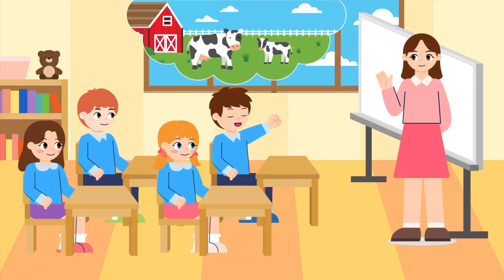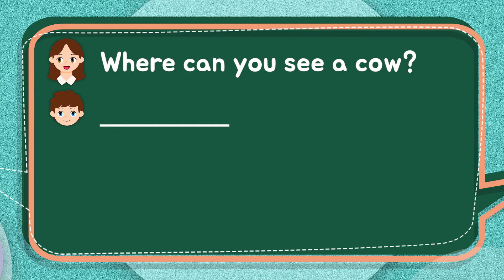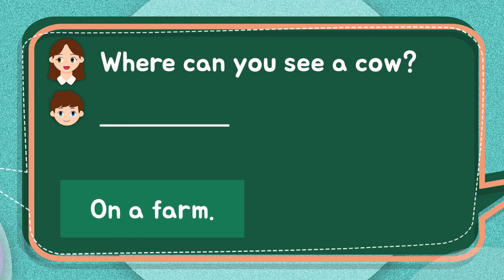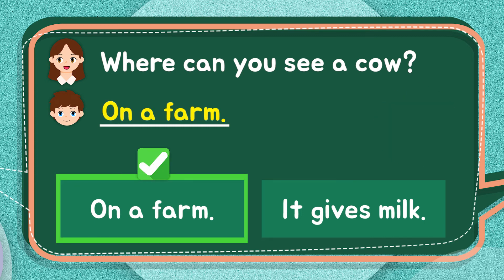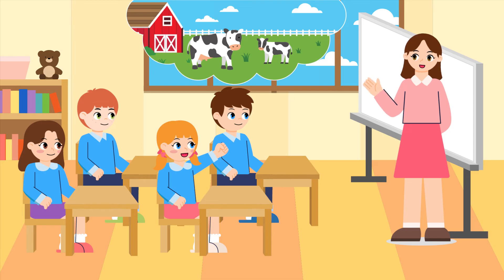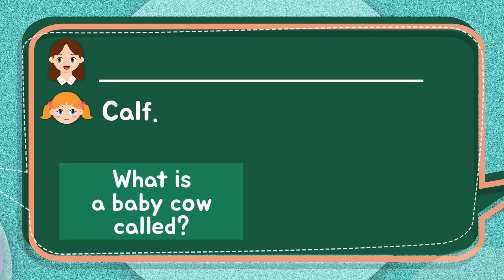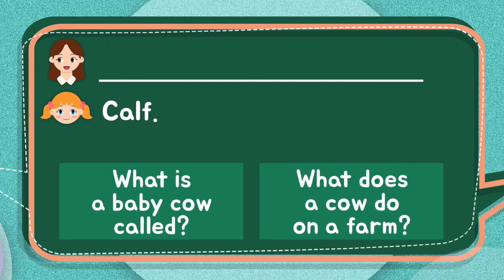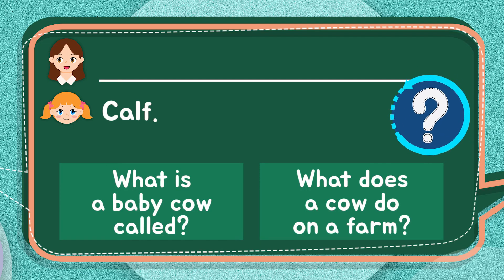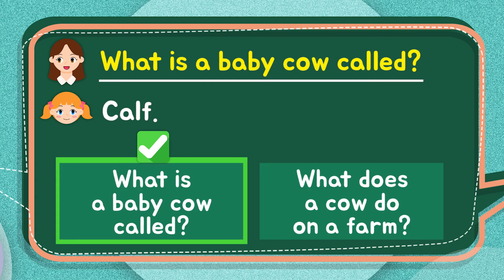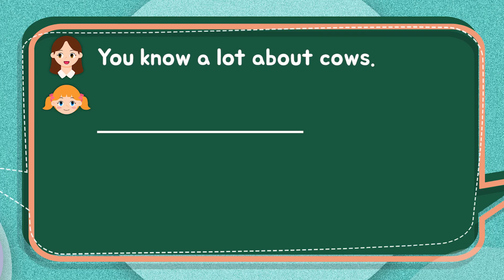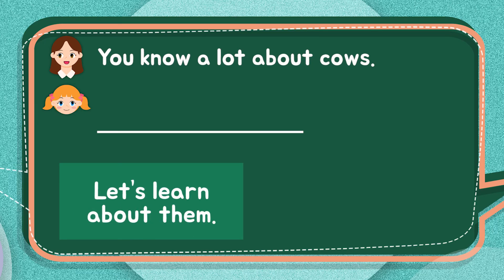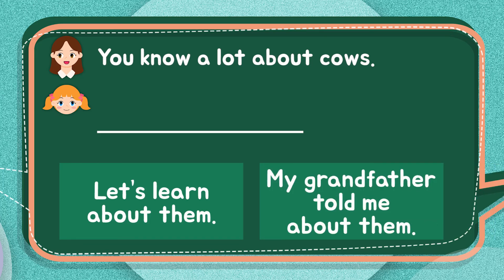What does Tom say? Where can you see a cow? On a farm. It gives milk. What does the teacher say? What is a baby cow called? What does a cow do on a farm? Calf. What does Anne say? You know a lot about cows. Let's learn about them. My grandfather told me about them. Calf.